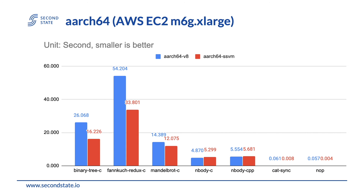Here is the benchmark score on the AArch64 platform, running on AWS EC2 M6G X-Large instance. The result is similar to the X86 platform — SSVM has the advantage on heavy workload applications.